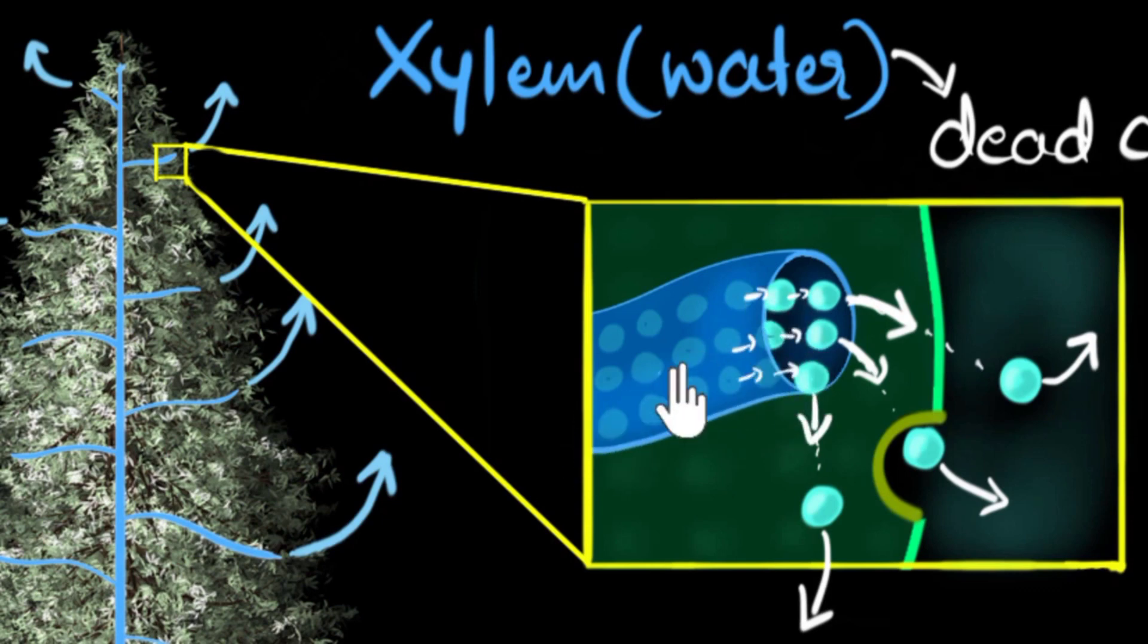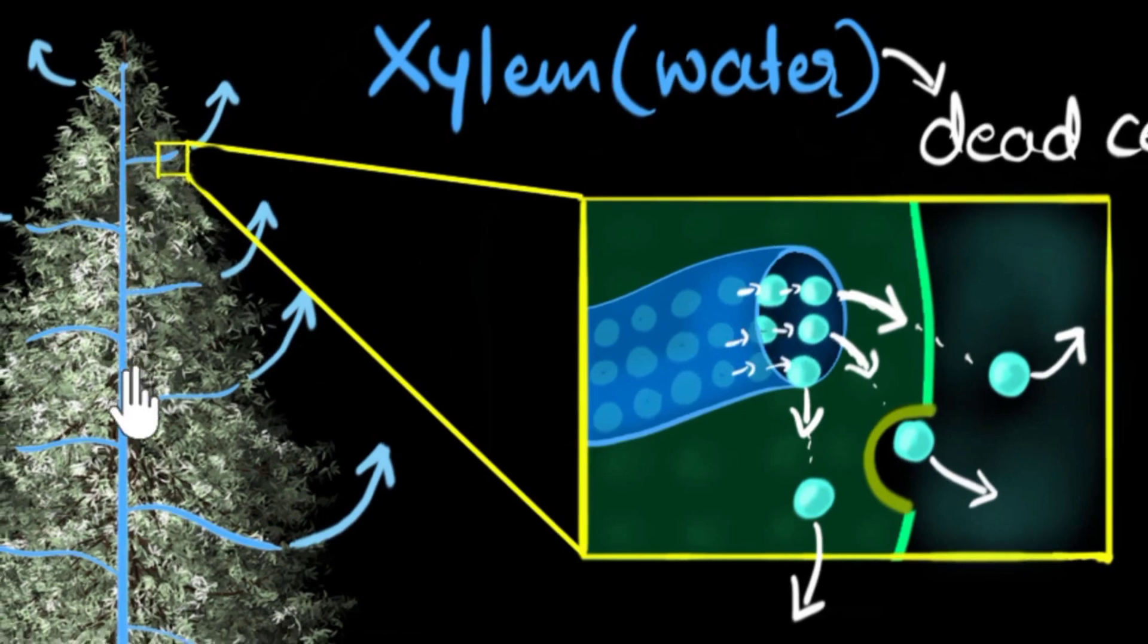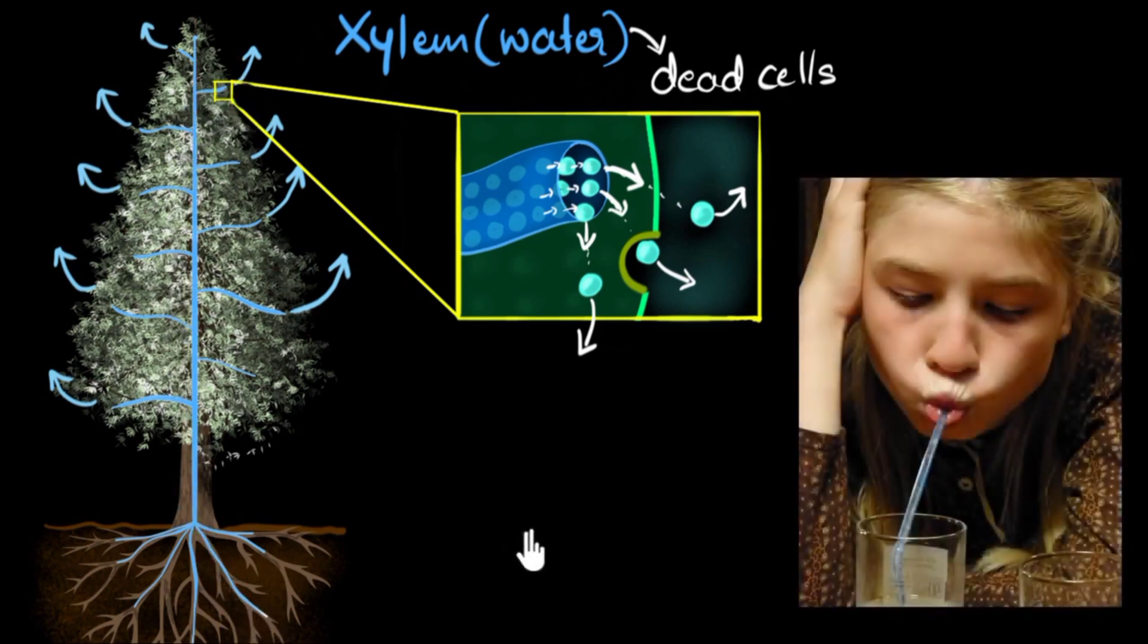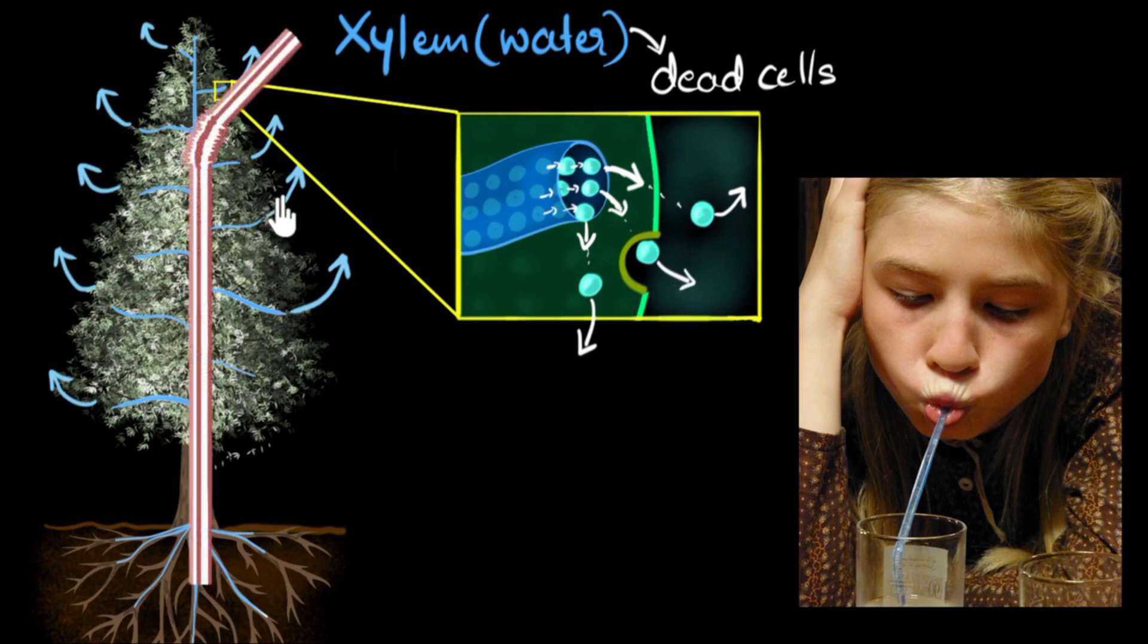And so can you see that because of this, the pulling force starts from the leaves and goes all the way down to the roots? Because this is a single column of water, a giant, very tall column of water. And that's how the force gets transmitted. This is kind of like how she's drinking that juice from the straw. She's sucking on that straw and the juice comes up. Similarly, you can imagine the xylem to be a giant straw. The evaporation causes that suction, because of which the water gets pulled up.